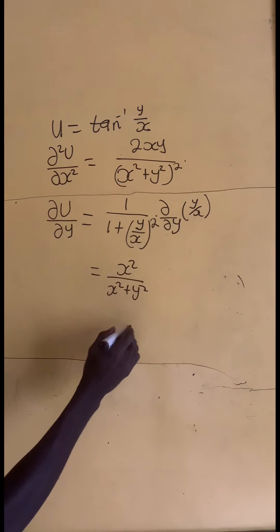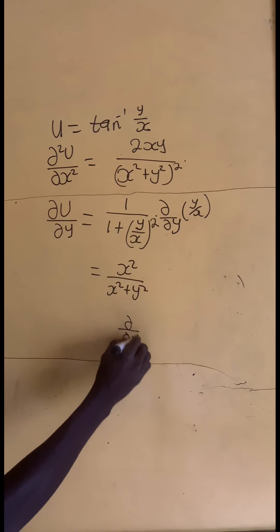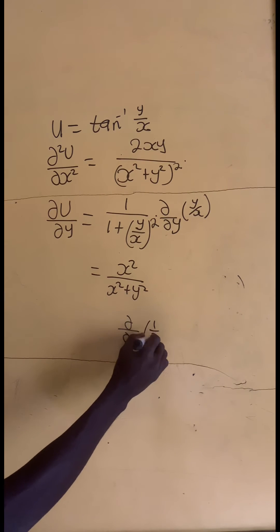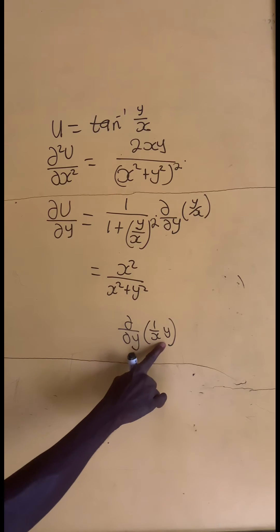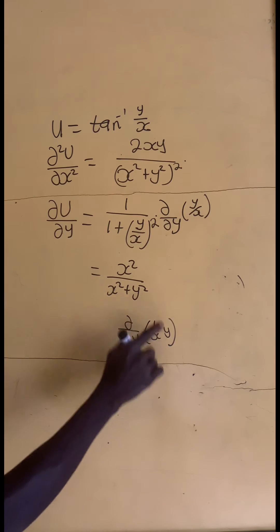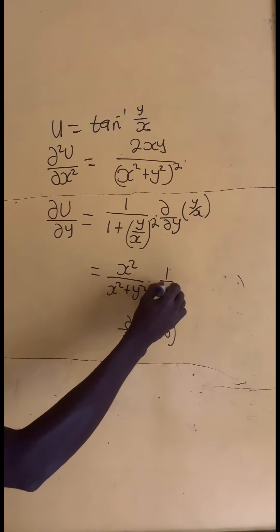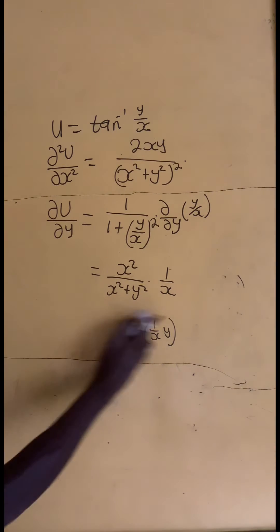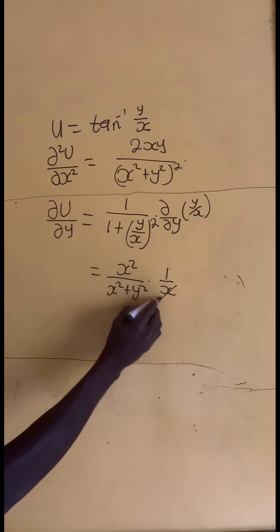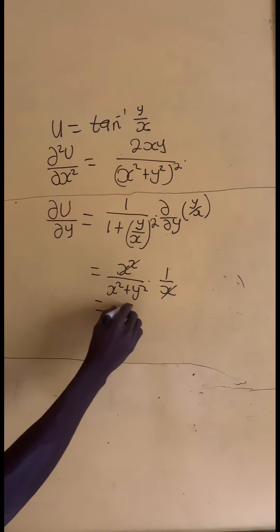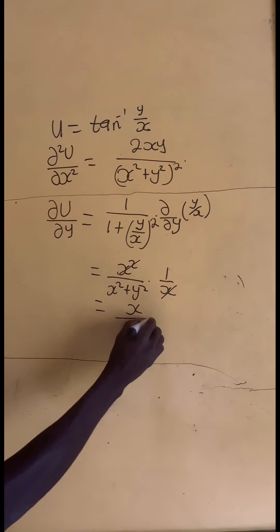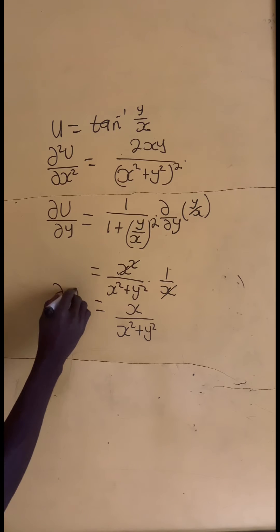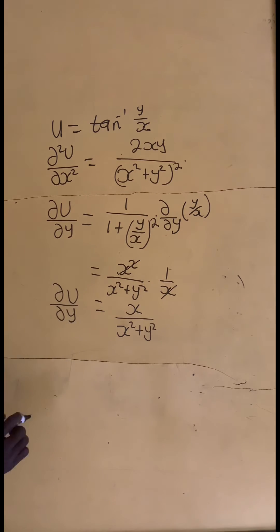We can rewrite the inner term as del y of 1 on x times y. If we take the partial derivative of this with respect to y, we get 1 on x. With this, x cancels one of the x squared, and it will remain as x divided by x squared plus y squared as del u on del y.